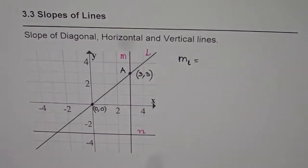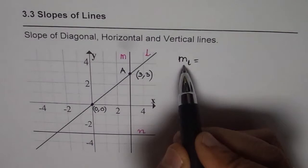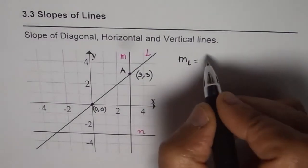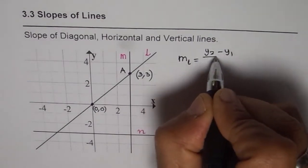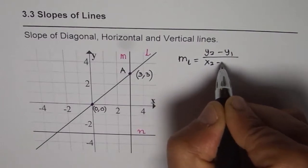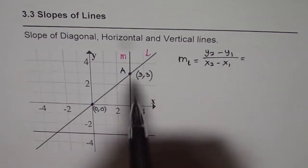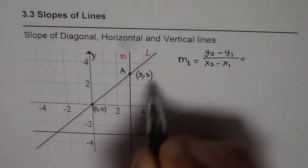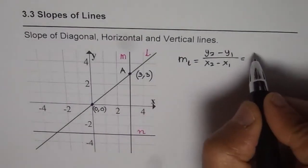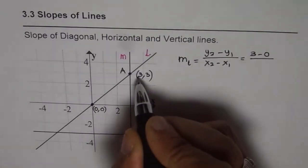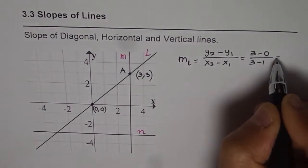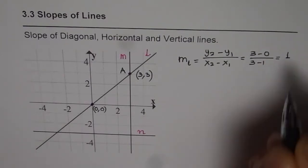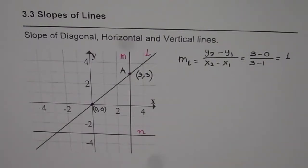So let's find slope of line L — writing L as a subscript to M, which is the letter we normally use for slope. The slope formula is y2 minus y1 divided by x2 minus x1. Here, (x2, y2) is (3, 3) and (x1, y1) is (0, 0). Substituting: 3 minus 0 divided by 3 minus 0. Simplifying, we get 3 over 3, which equals 1.